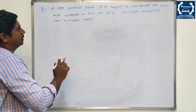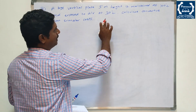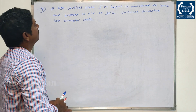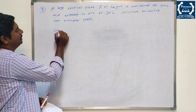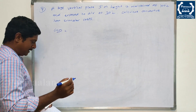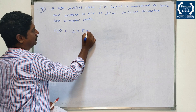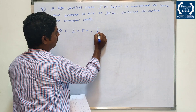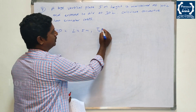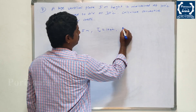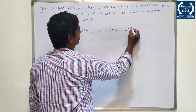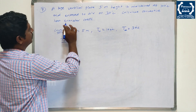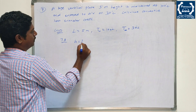This is a very simple problem. Looking at the vertical plate, you can use the free convection approach since no velocity is given. Given data: plate height L equals 5 metres. Wall temperature Tw equals 100 degrees Celsius. Air temperature T∞ equals 30 degrees Celsius. Find: convective heat transfer coefficient H.